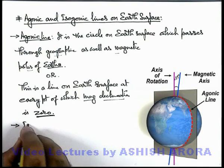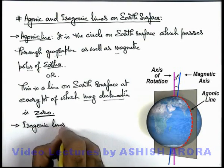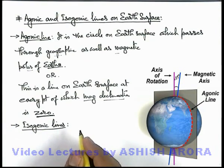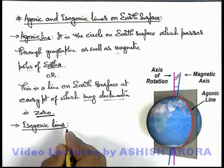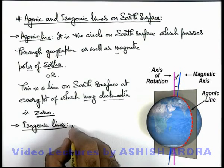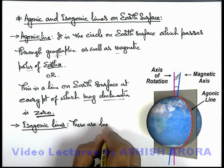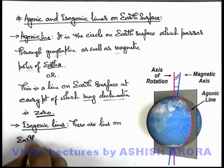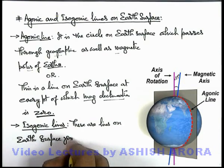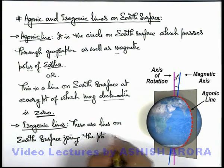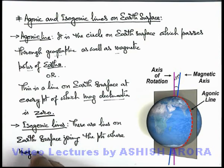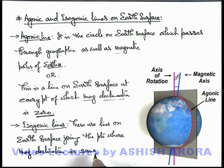Similar to this, we can define isogonic lines. It is practically difficult to visualize, but we can locate the points on earth surface which form isogonic lines. These are lines on earth surface joining the points where magnetic declination is the same. At different points on earth surface, the magnetic declination — that is, the angle between geographic and magnetic meridian — is different. But all those points on earth surface where magnetic declination is the same, if joined with lines, are called isogonic lines.